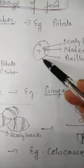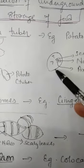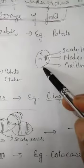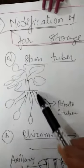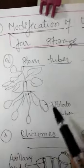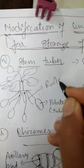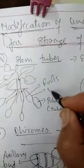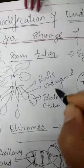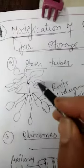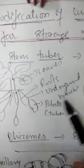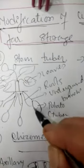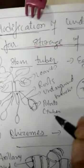In the axil of each scaly leaf, there is an axillary bud. We cannot see these on market potatoes because they have already been rubbed and washed, removing the scaly leaves. However, the nodes are still visible. The potato plant has underground branches among its roots, and the food prepared by the green leaves above ground is stored underground at the tips of these underground branches, forming the swollen structure we call a potato.